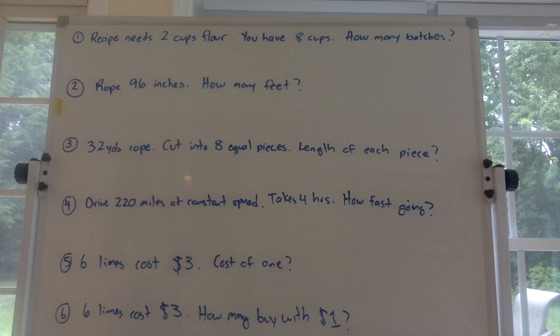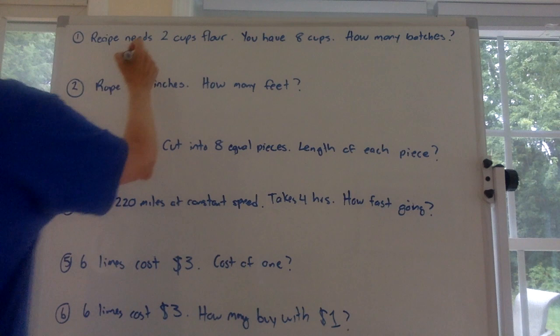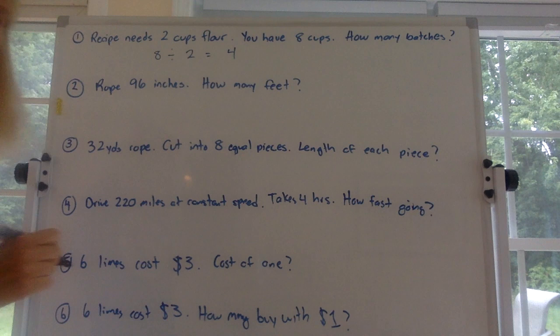Number one: a recipe needs two cups of flour. You have eight cups. How many batches can you make? You would just do 8 divided by 2 equals 4. What I want you to do is label every number because that helps with these problems.